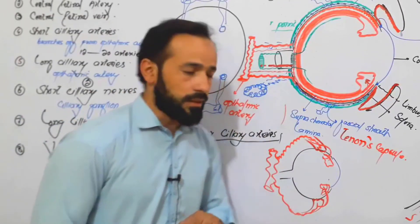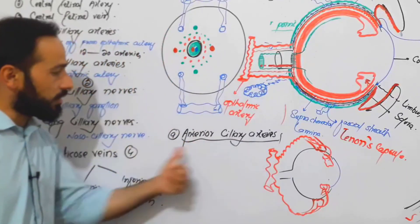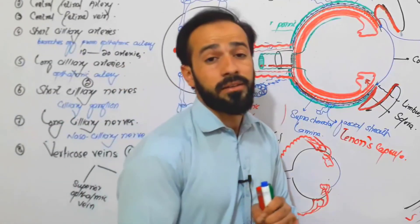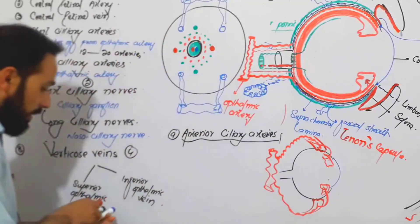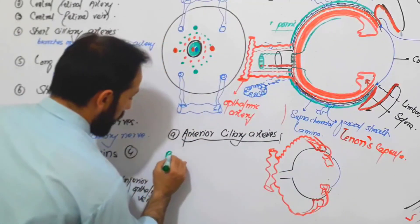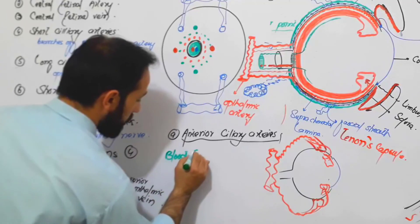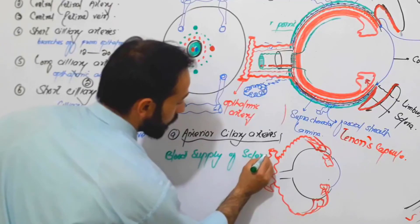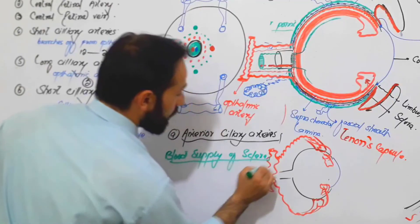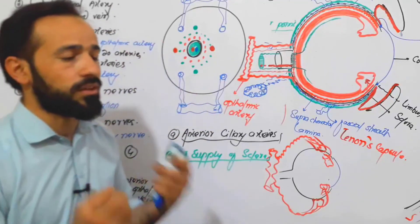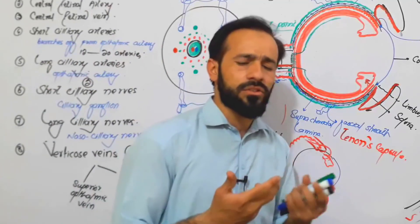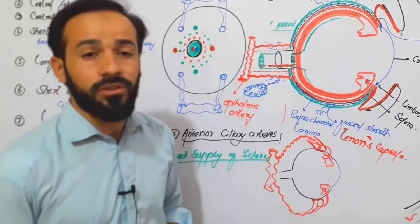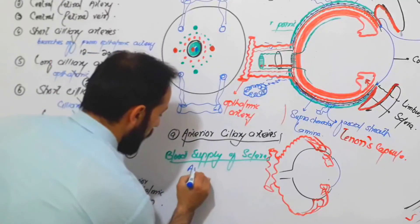These are the nine important structures which pierce the sclera and enter the eye. Regarding the blood supply of the sclera itself — as mentioned at the beginning of this lecture — the sclera is avascular. It is not supplied by any artery, so the sclera itself is avascular.